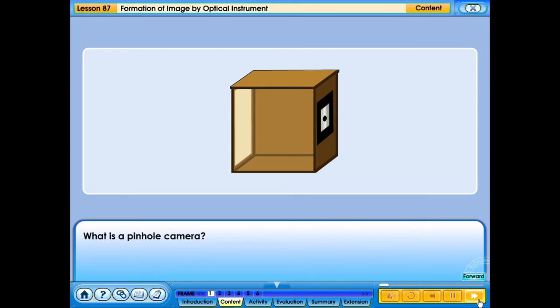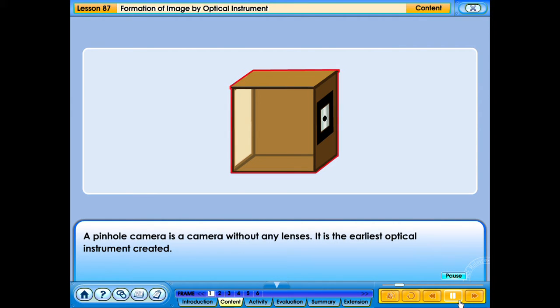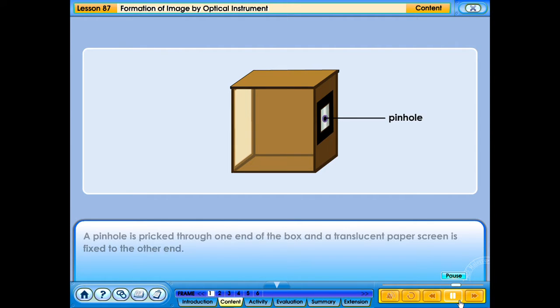What is a pinhole camera? A pinhole camera is a camera without any lenses. It is the earliest optical instrument created. A pinhole camera consists of a box with an inner surface that no light can escape from. A pinhole is pricked through one end of the box and a translucent paper screen is fixed on the other end.